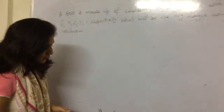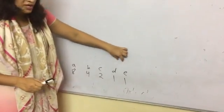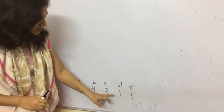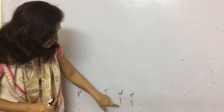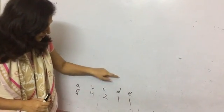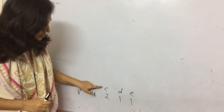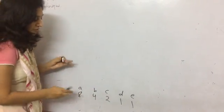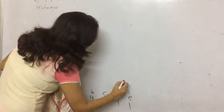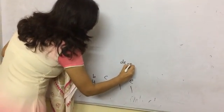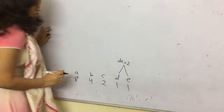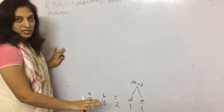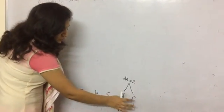Now, we have to sum up two characters in such a way that the sum is minimum. Like here, if we join D and E, the sum of the frequencies would be 2. And if we join C and D, the sum would be 3. So of course we will join D and E because it gives us the minimum value. So here comes D+E equal to 2. Now, if I have joined a character once, I cannot join it again. So D and E have already been joined.